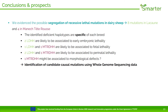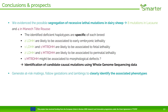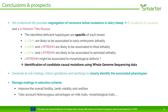In conclusion, we evidenced the possible segregation of recessive lethal mutations in dairy sheep: 8 mutations in Lacaune and 4 mutations in Manech Tête Rousse. The identified deficient haplotypes are specific to each breed, and several haplotypes are associated with embryonic lethal, fetal lethal, or perinatal lethal mutations. One haplotype in Manech might be associated with morphological defects. The next steps are to find candidate causal mutations using whole genome sequencing data, to generate at-risk matings and follow gestation and lambing to clearly identify the associated phenotypes, and then to manage matings in the selection scheme to improve overall fertility, lamb viability, and welfare, while also accounting for heterozygous advantages on milk traits or morphological traits.